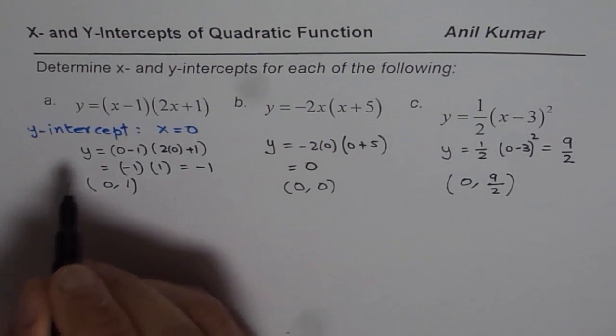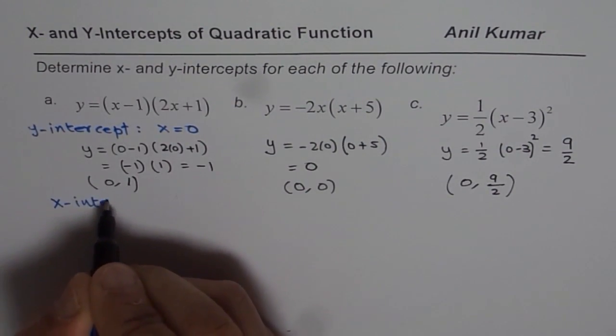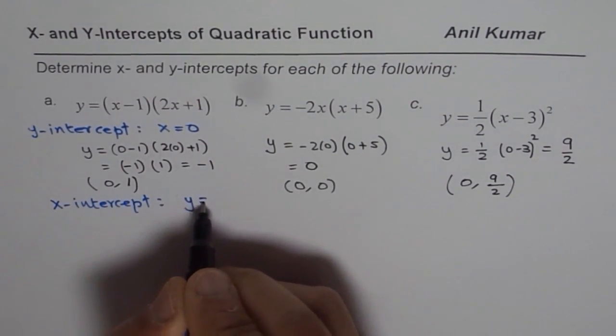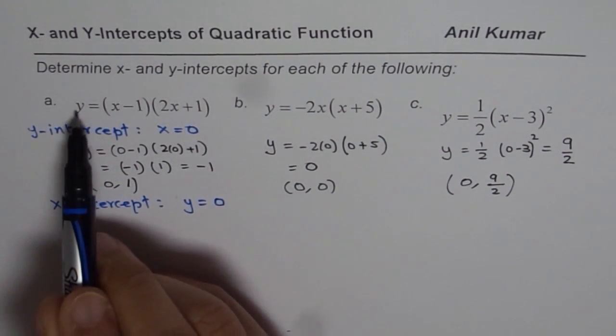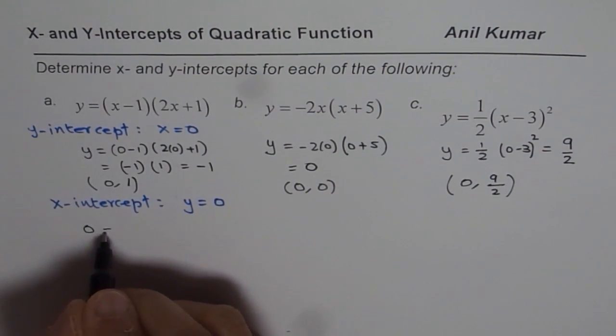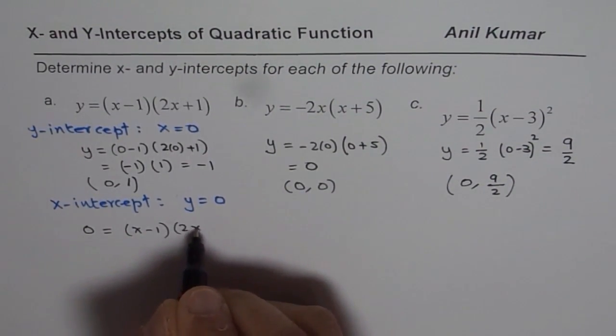Now, let us see how to find x-intercept. For x-intercept, y is equal to 0. So now I substitute y equals to 0 and solve these equations. So let me rewrite these equations with y equals to 0. You can actually pause the video, answer the question, and then look into my suggestion.